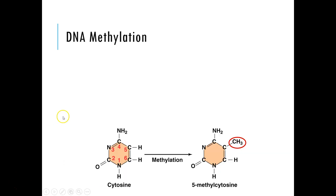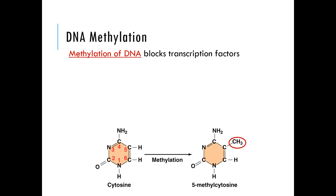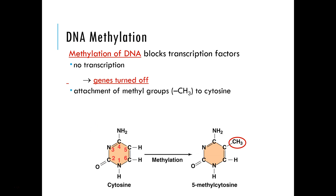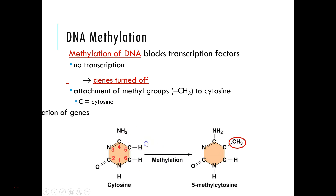Another way to control DNA packing is through DNA methylation. Methylation blocks transcription factors — things that promote transcription. When DNA gets methylated, there is no transcription and these genes are turned off. In organic chemistry, the methyl group is CH₃. Cytosine becomes 5-methylcytosine because a methyl group is added at the fifth position in the ring. This causes a nearly permanent inactivation of genes and is not detected when you do DNA sequencing — it's a level of information about which genes are expressed that is not purely contained within the genetic code.